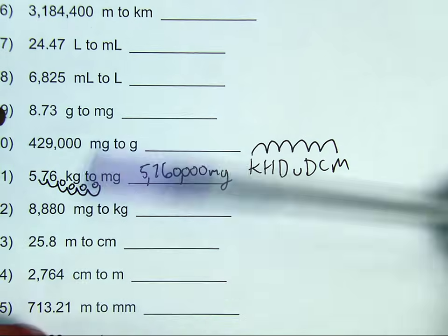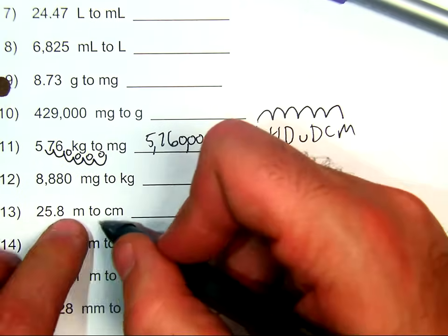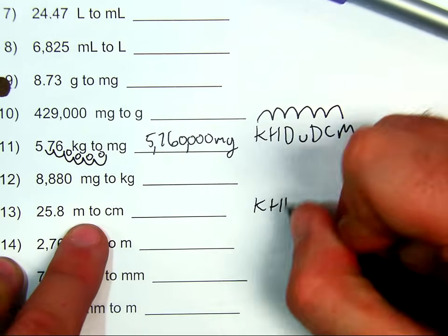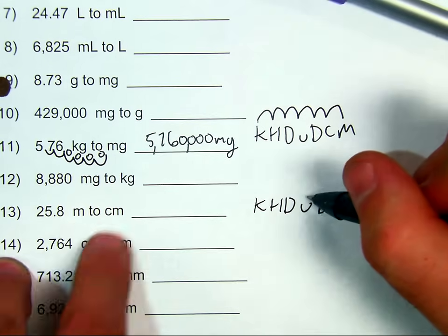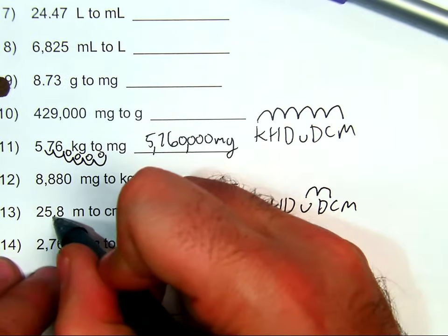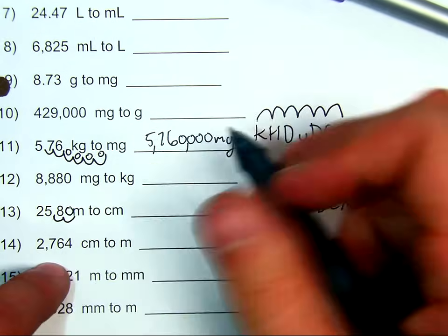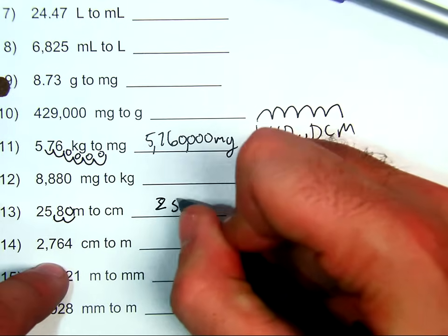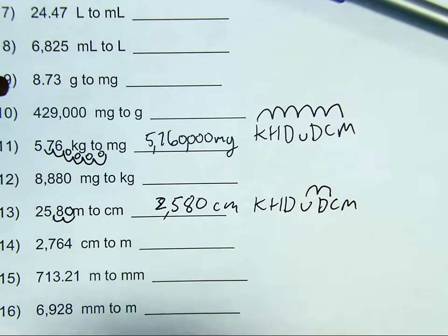And, one more. Let's just do our meters to centimeters right here, number 13. 25.8 meters to centimeters. King Henry died unexpectedly drinking chocolate milk. I'm going meters as my unit to centimeters. I'm going one, two to the right. So, I go one, two to the right. I don't have anything there, so I have to add a placeholder zero. 2,580 centimeters. It makes total sense because there are more centimeters than meters.